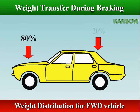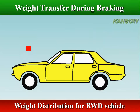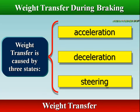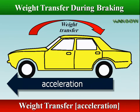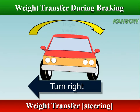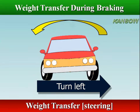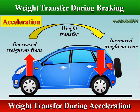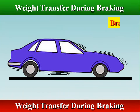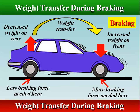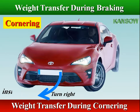Front-wheel-drive vehicles have a front-rear distribution of about 80% front and 20% rear, while rear-wheel-drive vehicles have about 60% front and 40% rear. Weight transfer is caused by three states: acceleration, deceleration, and steering. When the car moves in one of these directions, the car's weight moves in the opposite direction and compresses the suspension in that area. During acceleration, weight shifts from the front onto the rear tires. During braking, the weight shifts from the rear onto the front tires. During cornering, the weight shifts from the inside tires to the outside tires.